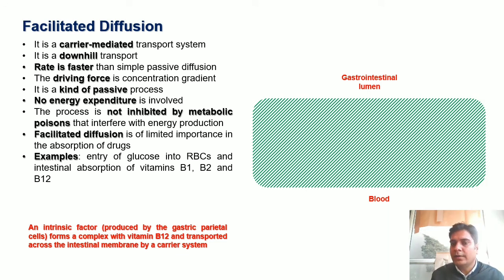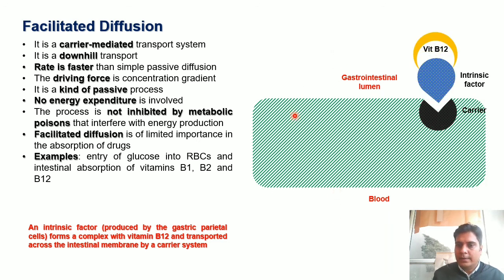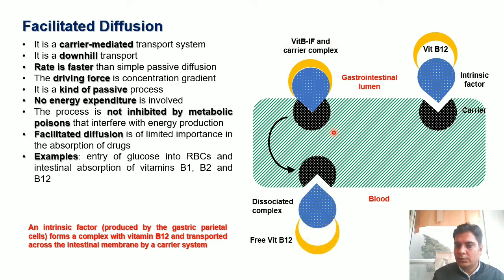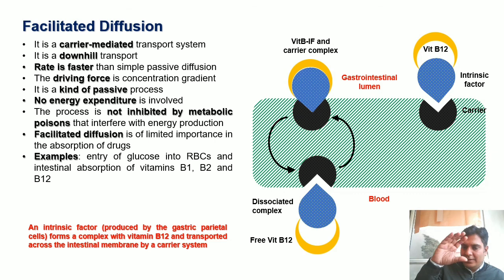In the figure showing facilitated diffusion, the upper part is the gastrointestinal lumen and the lower part is blood — drug movement from lumen to blood is absorption. For vitamin B12 transport, an intrinsic factor and a carrier are both involved. The vitamin B12, intrinsic factor, and carrier bind together to form a complex, which traverses to the blood side. The complex then dissociates into vitamin B12, intrinsic factor, and carrier, and the carrier returns to transport another molecule.